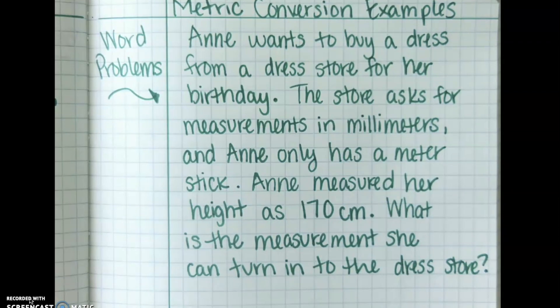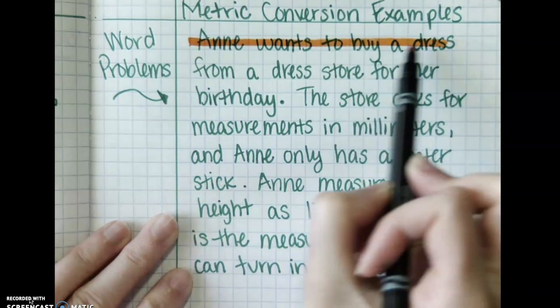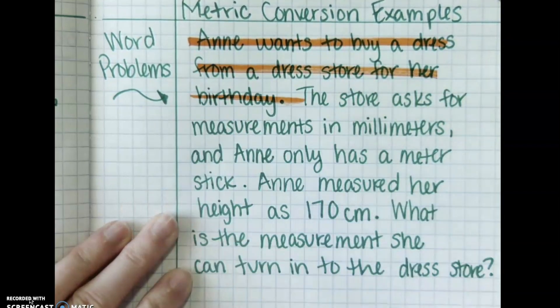Okay, so she wants to buy a dress from a dress store for her birthday. That's nice to know but it's extra information. We don't really need that, so cross that out. Nice to know, Anne.